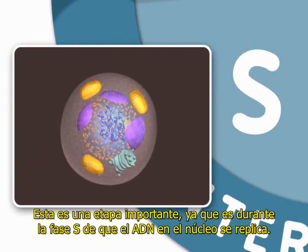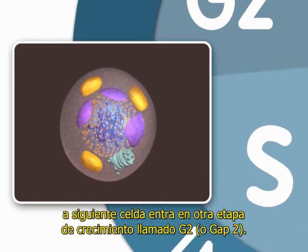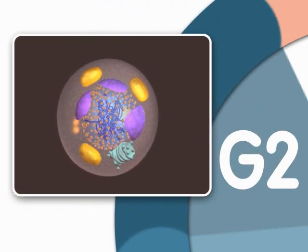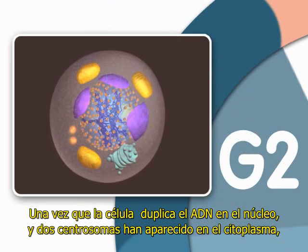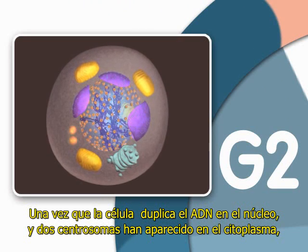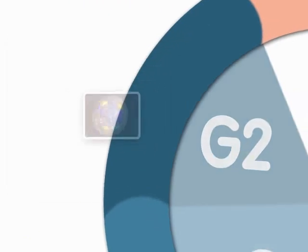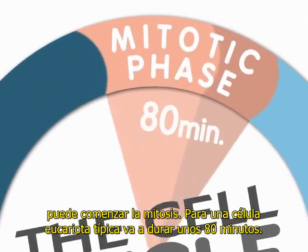It is during the S phase that DNA in the nucleus is replicated. The cell next enters another growth stage called G2, or Gap2, where the cell finishes growing. Once the cell has duplicated DNA in the nucleus and two centrosomes have appeared in the cytoplasm, mitosis can begin. For a typical eukaryotic cell, this will last about 80 minutes.